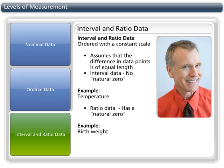Interval or ratio data is ordered data with a constant scale. It indicates a numeric response with equal difference between points. Continuous data would fall into this category. Interval data has no natural zero; however, ratio data does have a natural zero. So, if I were to describe myself using interval measures, I would say I am 5 foot 5 inches tall, I have two children, etc.